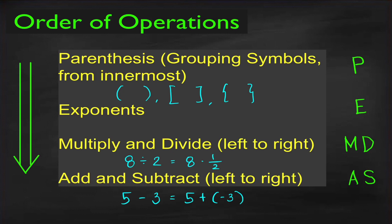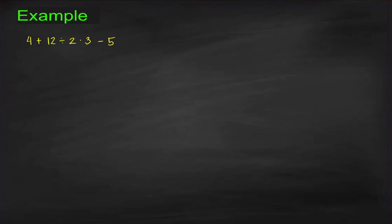But why do we have parentheses on top of them? Because we use grouping symbols when we want a set of operations to be performed first before others. Let us go back to the problem: evaluate 4 plus 12 divided by 2 times 3 minus 5. We want to apply PEMDAS, the correct order of operations.